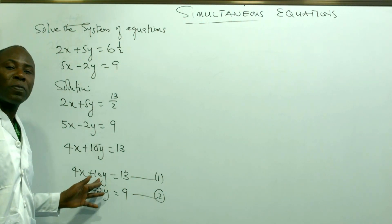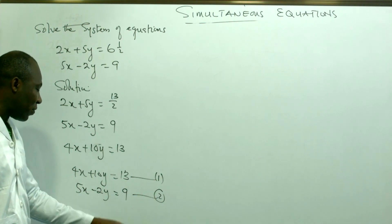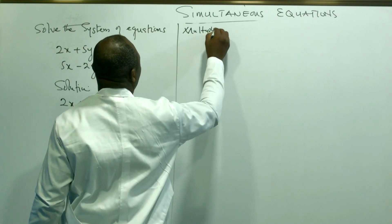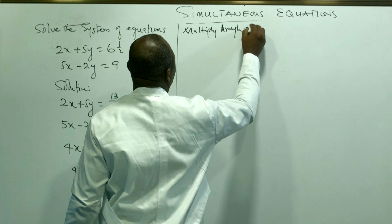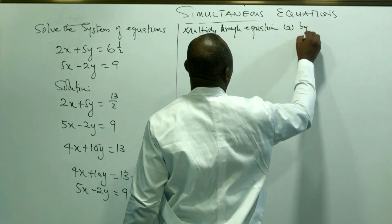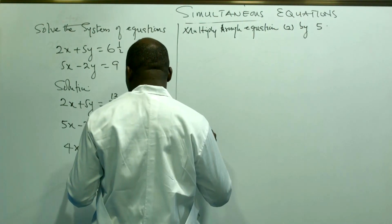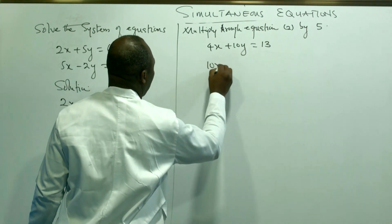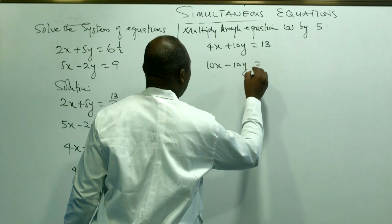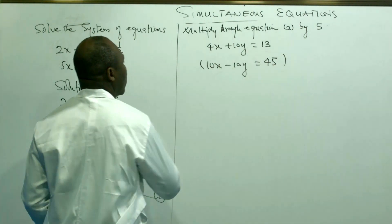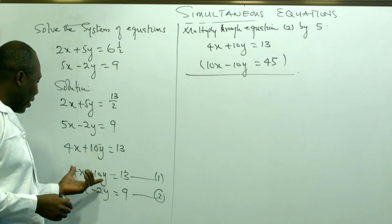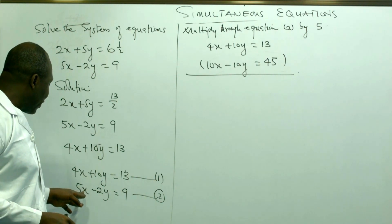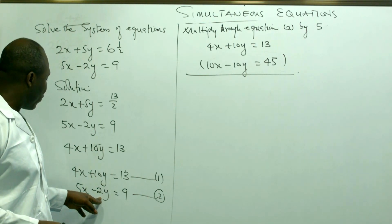Since 2 is a factor of 10 and 2 can go into 10 by 5, we multiply equation 2 by 5. Equation 1 is left intact. Equation 2, multiplied by 5, gives us 25x minus 10y equals 45.